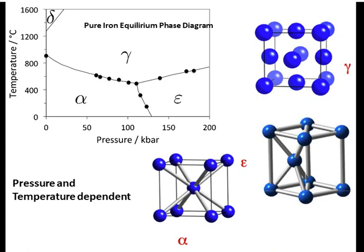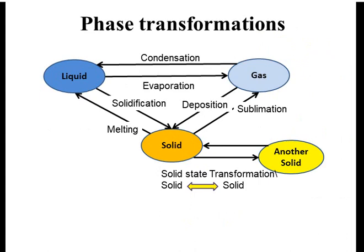Now let's talk about phase transformations. A liquid phase can convert into gas by evaporation, and gas can convert into liquid by condensation. Similarly, liquid can convert into solid by solidification, and solid can convert into liquid by melting. A solid can also convert into gas by sublimation, and gas can convert into solid by deposition.